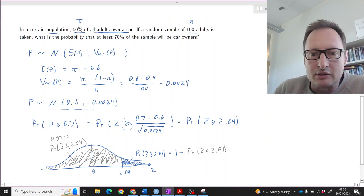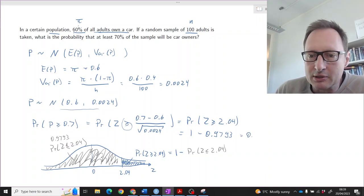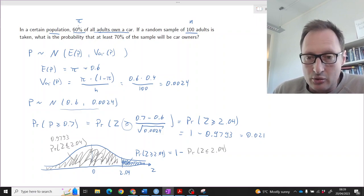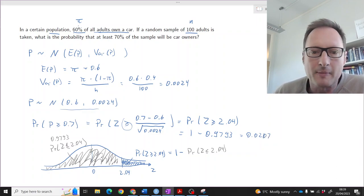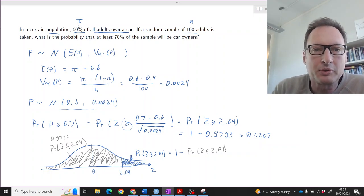So let's just complete our calculation. That is 1 minus 0.9793, and we are left with a probability of 0.0207. So that's the size of this probability here. So there's about 2% probability that if you draw from a population with a 60% car ownership proportion a sample of 100, that in the sample you get a proportion which is at least as large as 70%.